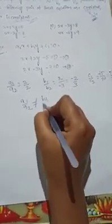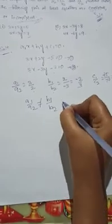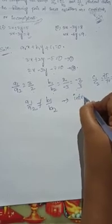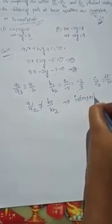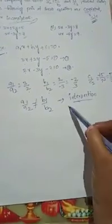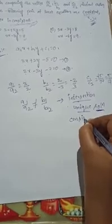These ratios are not equal — A1 by A2 is not equal to B1 by B2. In this case, the two lines are intersecting lines. Intersecting lines give a unique solution, so we can get the solution. Hence, these two equations are consistent.